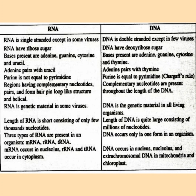Three types of RNA are present in an organism: the messenger RNA (mRNA), the ribosomal RNA (rRNA), and the transfer RNA (tRNA). DNA occurs only in one form in an organism. The mRNA occurs in the nucleus, while rRNA and tRNA occur in the cytoplasm. DNA occurs only in the nucleus, and extra-chromosomal DNA occurs in the mitochondria and the chloroplast.